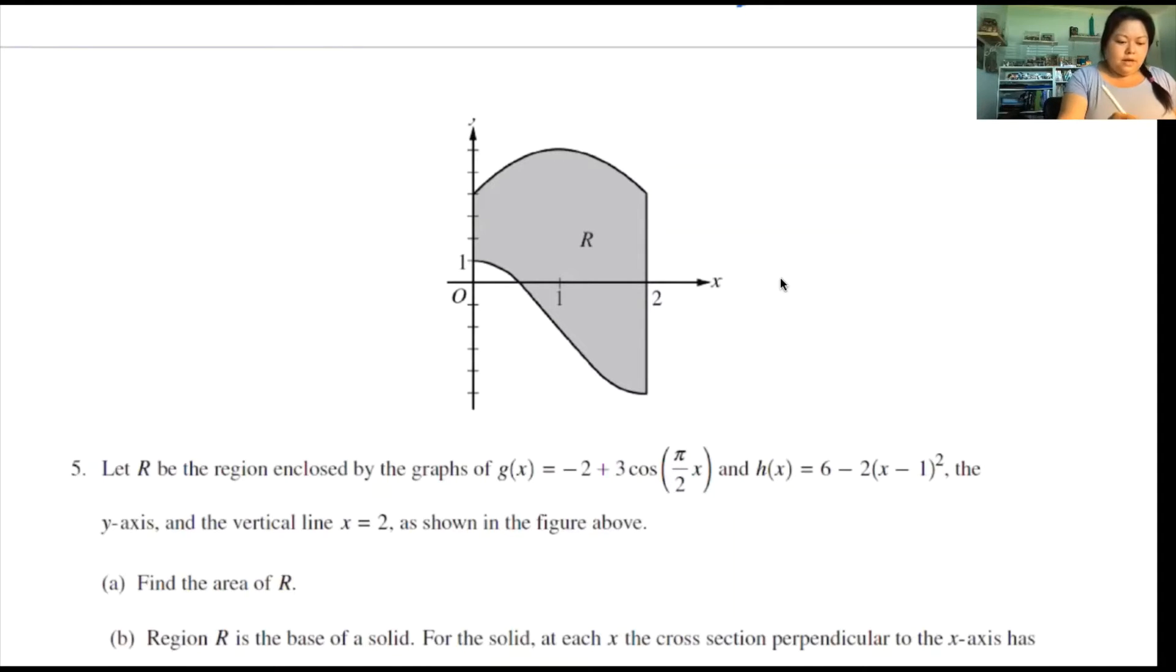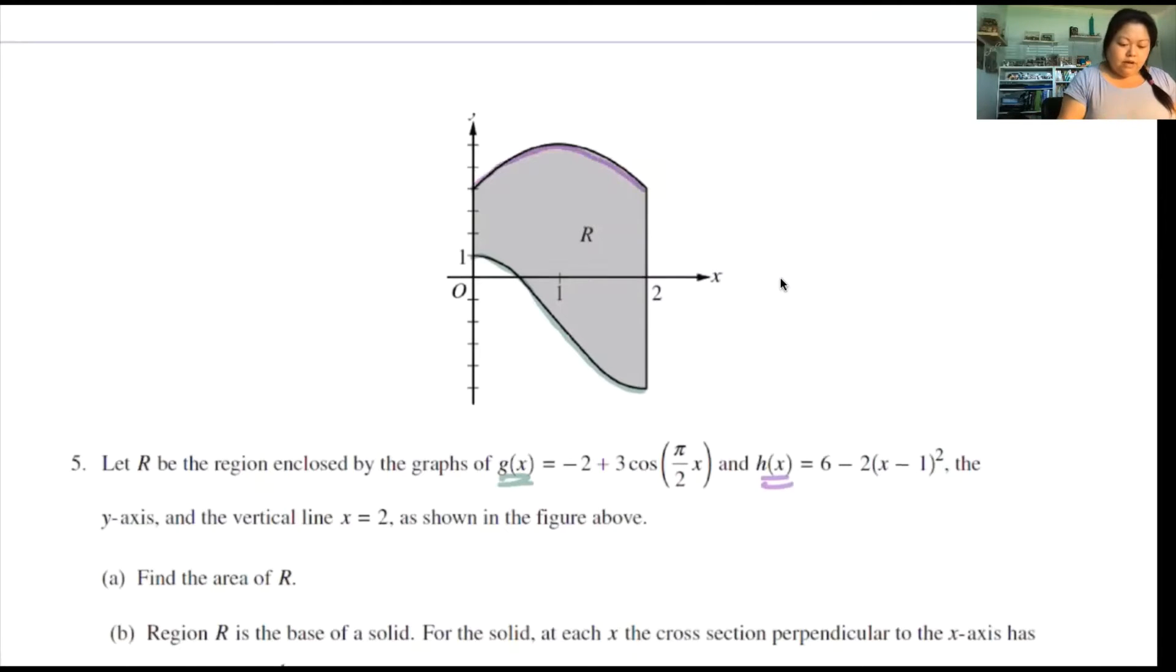So what am I going to do first? I'm going to figure out which one is g and which one is h, so that way I know which one's my function. g(x) is the cosine function, this one right here, and the reason why I know that is because it has a curve. It looks like a trig function. And then my h(x) is upside down parabola, so it's this function right here. So find the area of R.